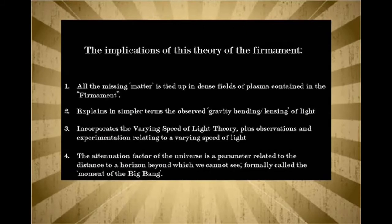The implications of this theory: All the missing matter is tied up in dense fields of plasma contained in the firmament. So now we can explain all the missing matter in the universe. Explained in simpler terms, the observed gravity bending, lensing of light, or the relativistic effects of light. It incorporates the varying speed of light theory. As it travels through different mediums, the light changes speed, is reflected, diffracted, absorbed, or transmitted.